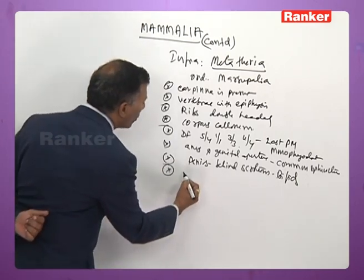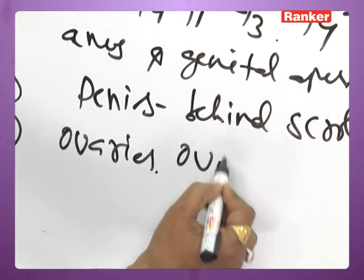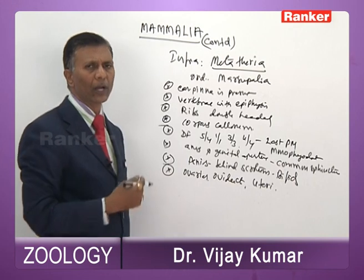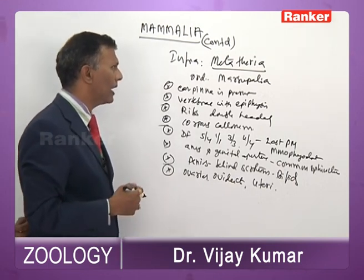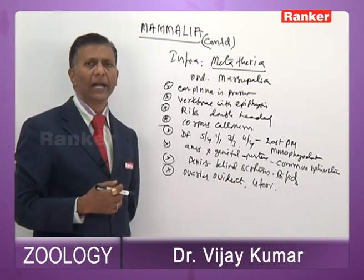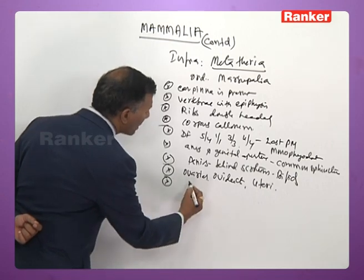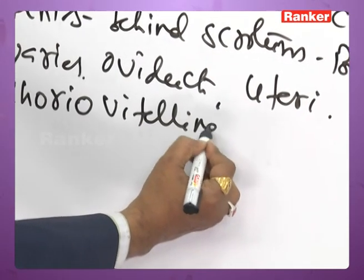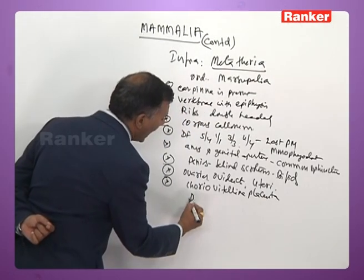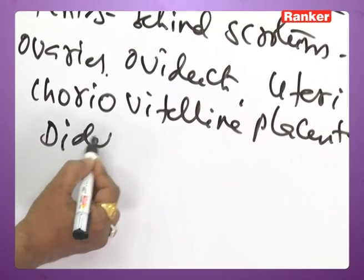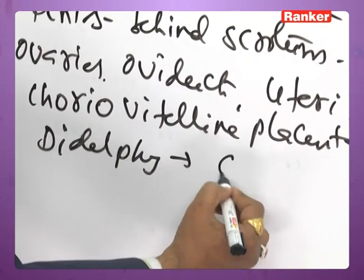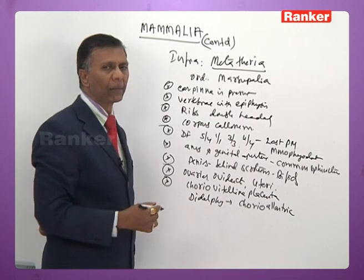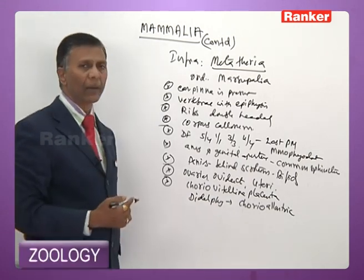The female has two ovaries, two oviducts, and two uteri — all paired. That is why they are also called Didelphia. They have a placenta: most have choriovitelline placenta, but Didelphis has chorioallantoic placenta. All other marsupials have choriovitelline placenta.